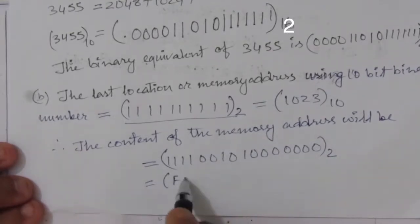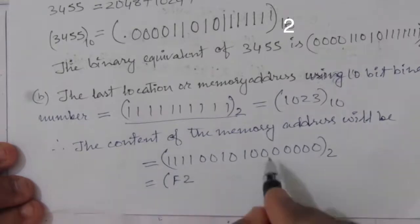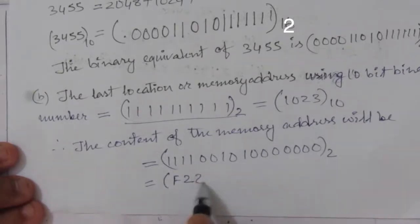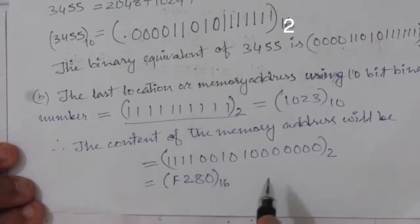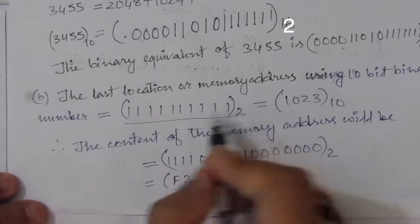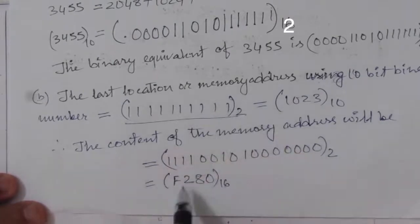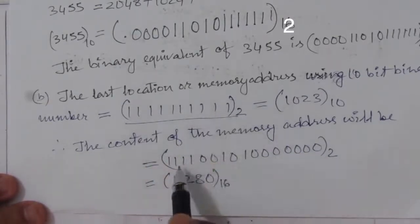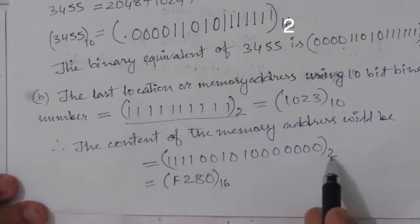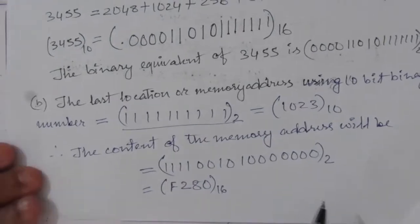In hexadecimal, the one's complement data stored at the last memory address works out as follows: the first nibble is F, the next is 2, then 8, then 0. So the hexadecimal content of this last memory address is F280. This is the solution to problem number 7.3.